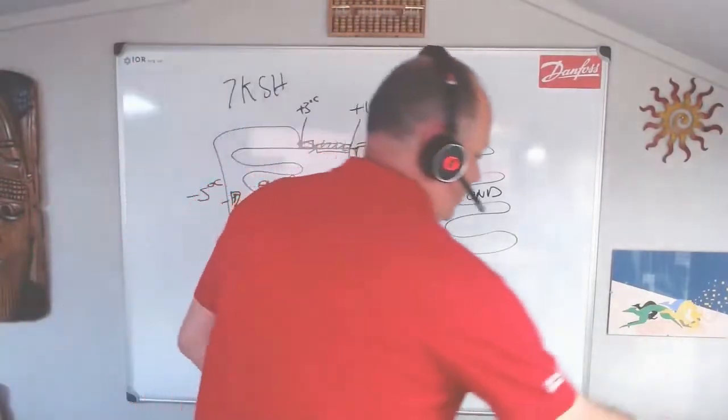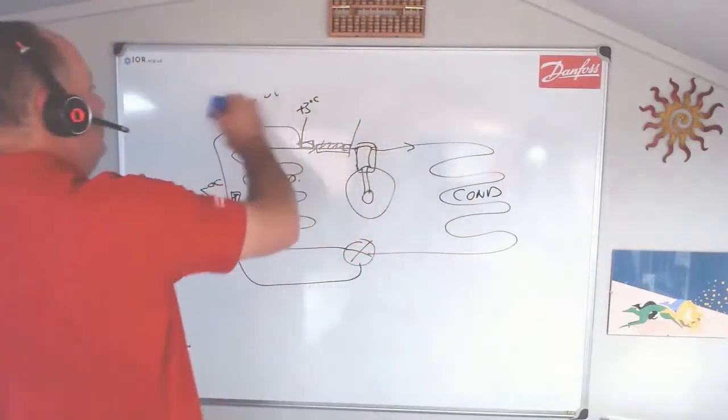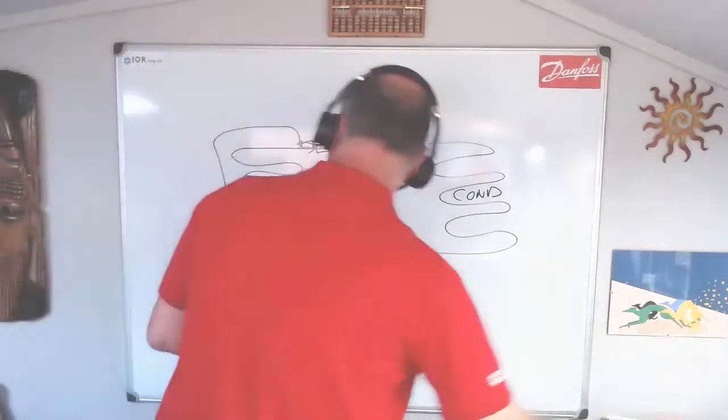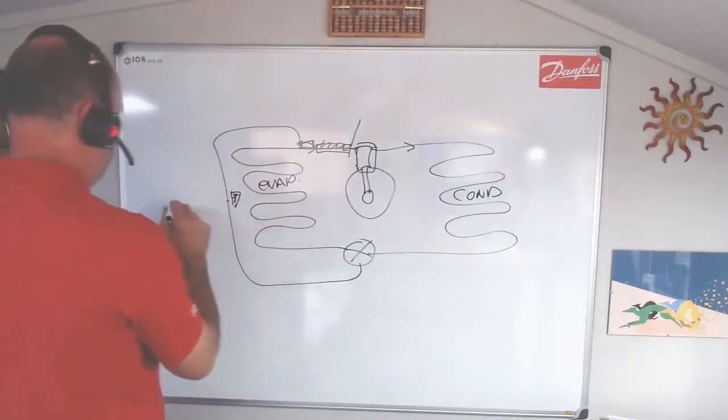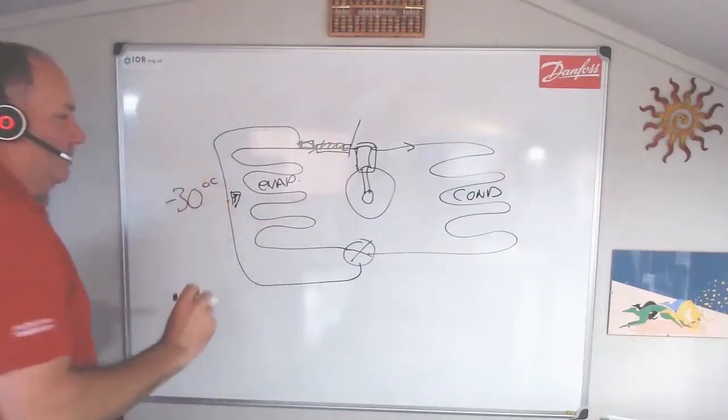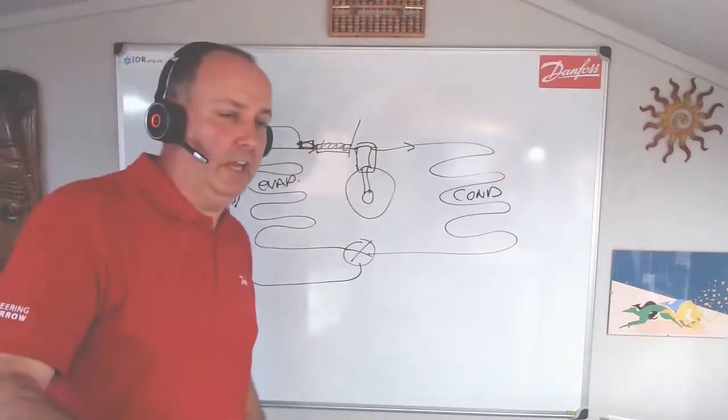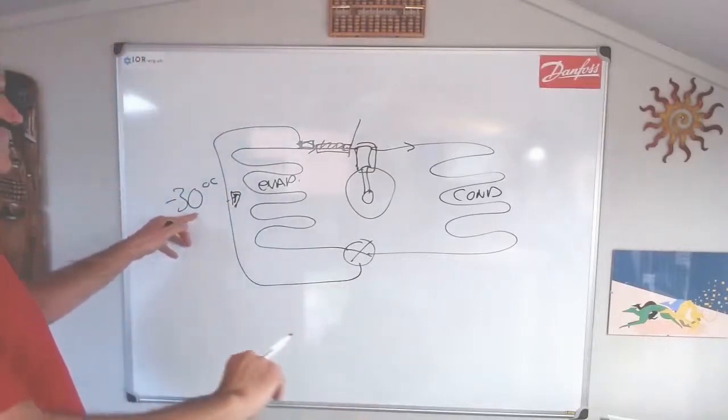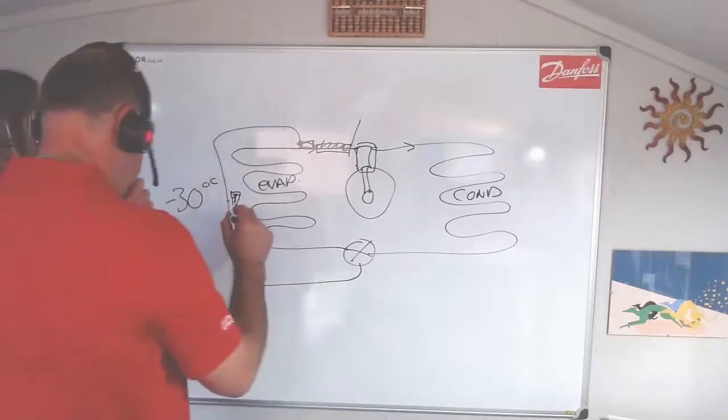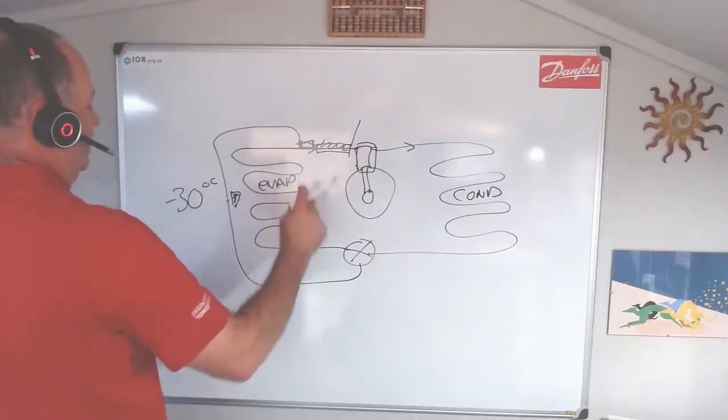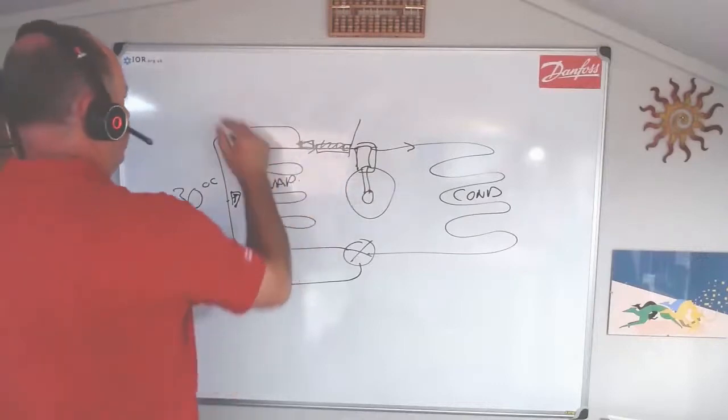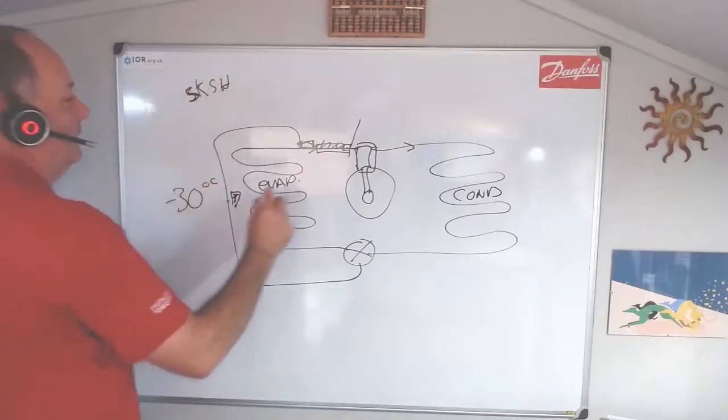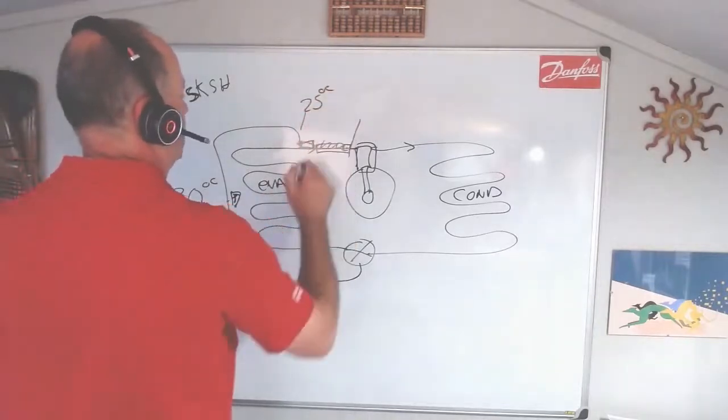The challenge is, let's just change some of our figures a minute. Let's say we're now, let's make it nice and cold. We're going to evaporate minus 30°C. And apologies for everybody who works in F. So we're evaporating at minus 30. Now, if we keep our superheat, let's say 5K superheat, which is not a lot, but just to keep the maths nice and simple. So here we'll have minus 25.